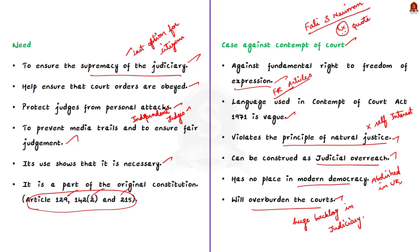To conclude, the scope of contempt must be limited to willful disobedience of court directions. Steps must also be taken to remove the 'scandalizing the court' provision, and the language defining contempt must be made clearer to avoid excessive discretion in interpretation. I hope you now understand the concept of contempt of court and the constitutional and statutory provisions regarding it. These types of topics are very important for mains examinations. To know more concepts like this, watch the Hindu news analysis of Shankar IAS Academy regularly.